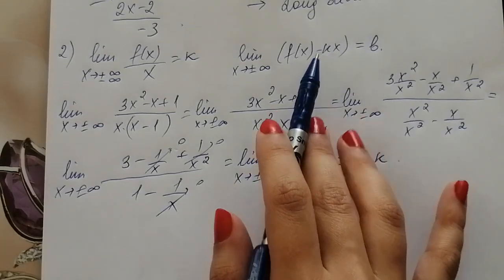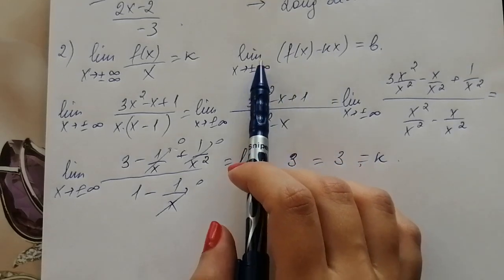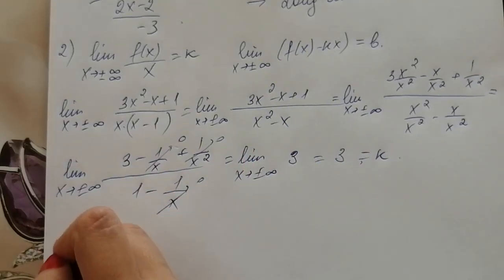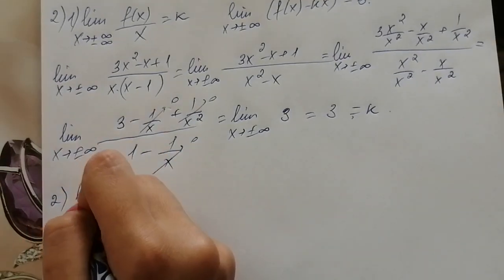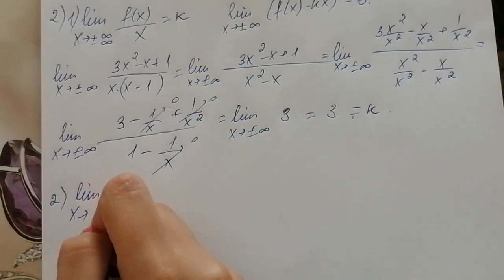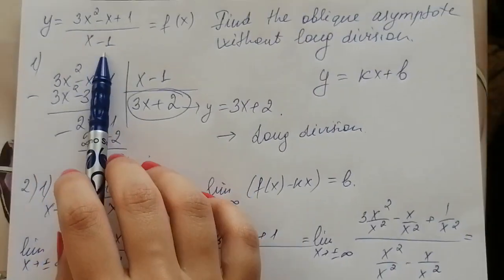And the second we find the value of b. In order to find it we find the limit of function f(x) minus kx when x tends to infinity. And limit of function f(x) is equal to infinity. In our task f(x) is this.